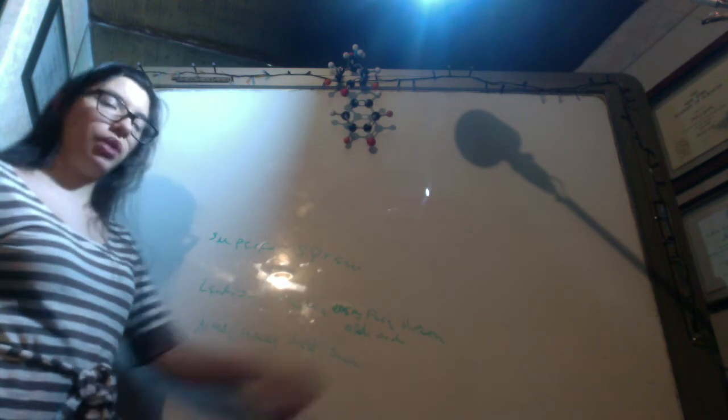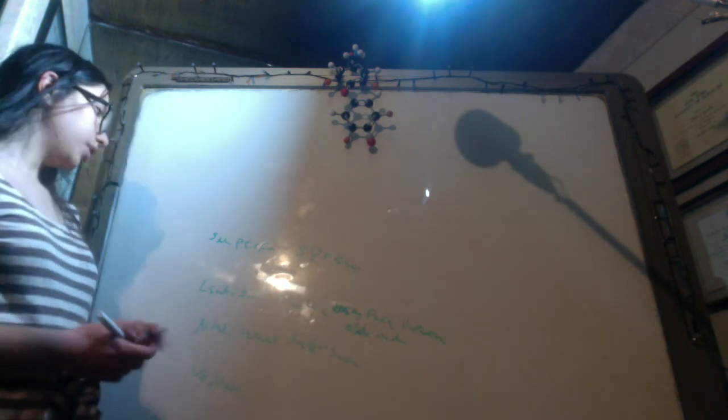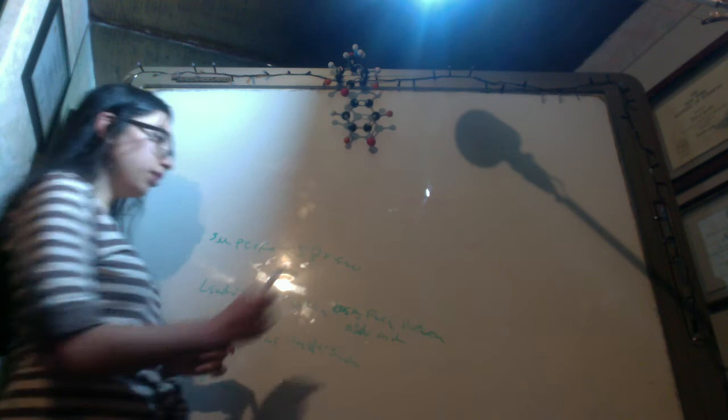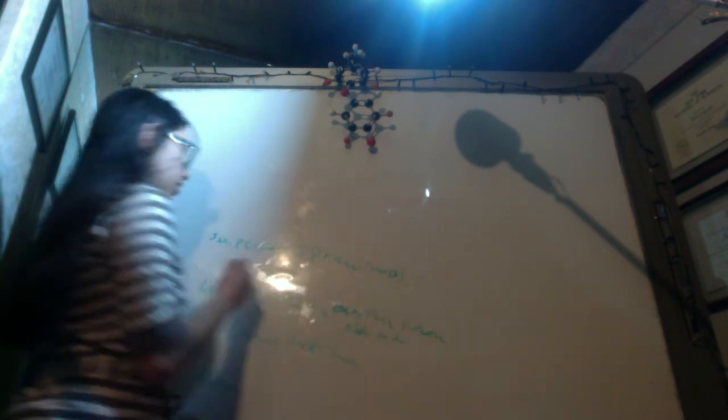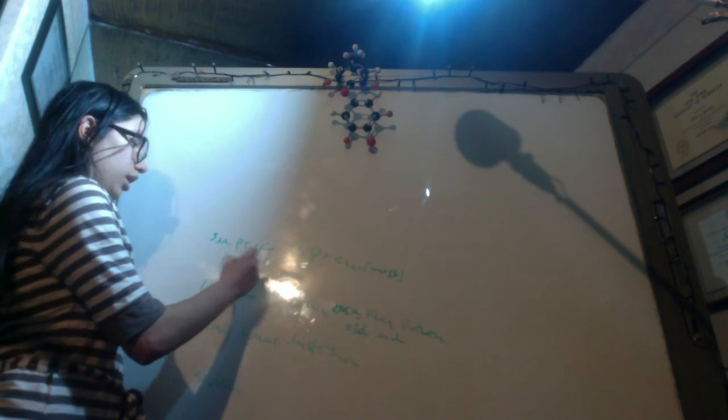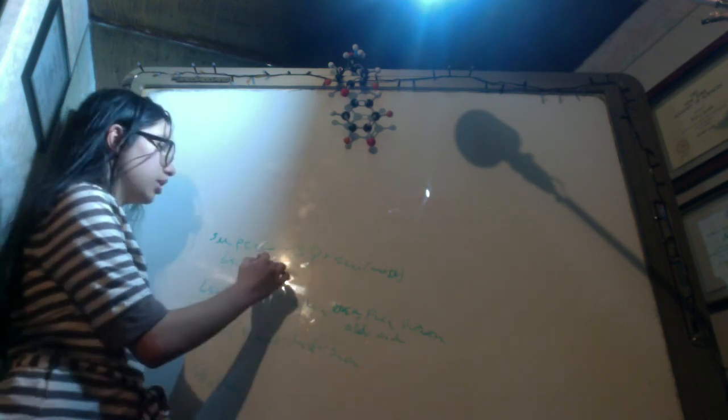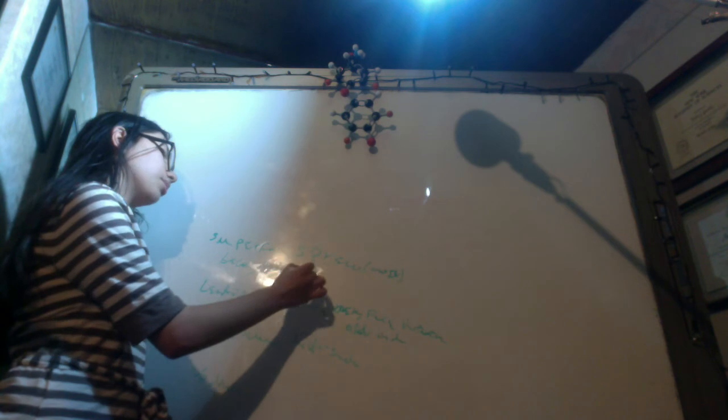The superficial spreading is the most common type and presents in men on the back, the classical location, and in women, the classical location is in the lower extremities.